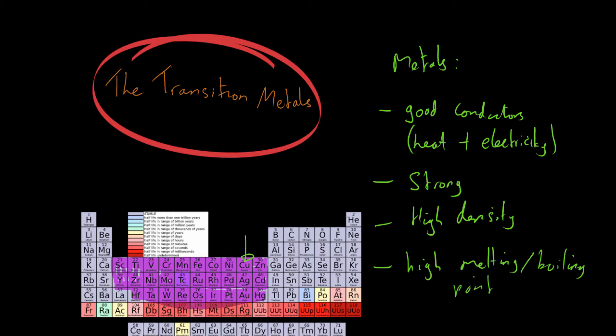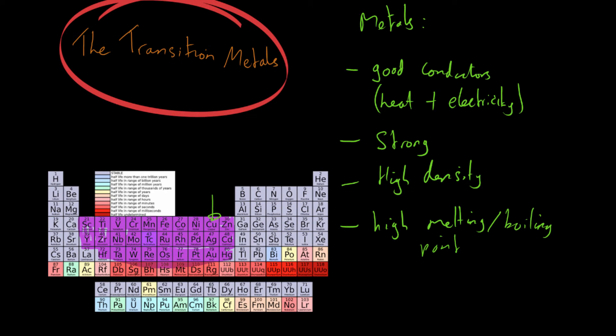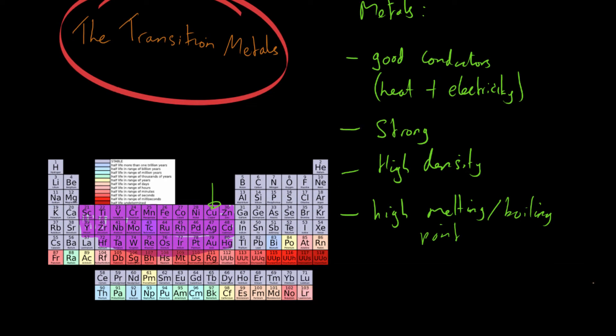Now there is one exception to this and that is mercury. Because we know that mercury is actually a liquid at room temperature. It's found in thermometers. It's the liquid inside a lot of thermometers. This is mercury here, Hg. You can see at the bottom right of this group. Now we don't need to know why it has these properties, but we just need to know that it is an exception.